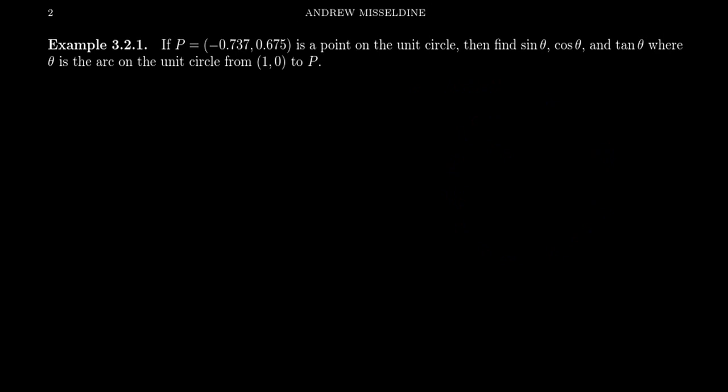So as an example of that, suppose the point P, which is given as (-0.737, 0.675), this is a point on the unit circle. What we want to do is we want to find sine of theta, cosine of theta, and tangent of theta, where theta is the arc of the unit circle from (1, 0) to P. So remember our unit circle right here, if we take the positive x-axis, this point over here is going to be (1, 0). It's the unit circle, so you go one distance away from the origin right here, you're going to get exactly (1, 0).